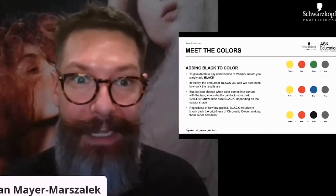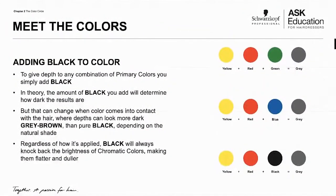Let's blow this up and take a deep look at this one, because this is where things get interesting. To give any kind of depth to a combination of primary colors, you simply add black. When you mix yellow, red, and green together, you get a gray color. When you mix yellow, red, and blue all together, you get a grayish brown. When you mix yellow, red, and black, you also get a gray. The amount of black you add will determine how dark the results are.